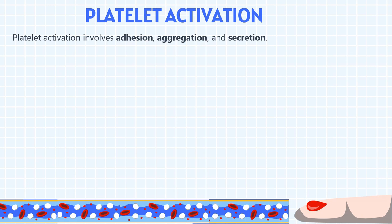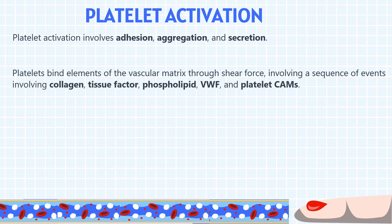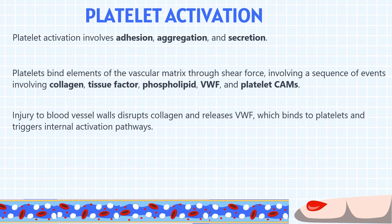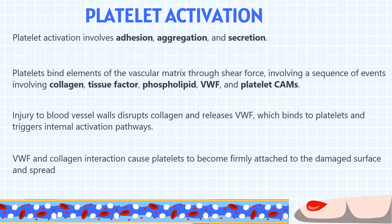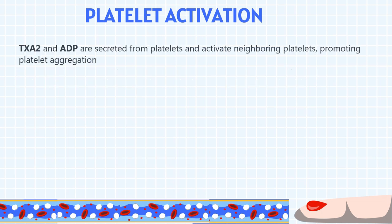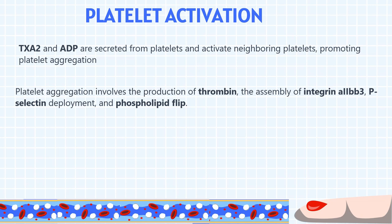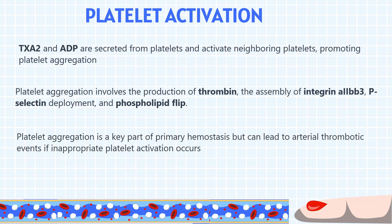Platelet activation involves adhesion, aggregation, and secretion. Platelets bind elements of the vascular matrix through shear force, involving a sequence of events involving collagen, tissue factor, phospholipid, von Willebrand factor, and platelet endothelial cell adhesion molecules. Injury to blood vessel walls disrupts collagen and releases von Willebrand factor, which binds to platelets and triggers internal activation pathways. Von Willebrand factor and collagen interaction cause platelets to become firmly attached to the damaged surface and spread. TXA2 and ADP are secreted from platelets and activate neighboring platelets, promoting platelet aggregation. Platelet aggregation involves the production of thrombin, the assembly of integrin AIIB3, p-selectin deployment, and phospholipid flip. Platelet aggregation is a key part of primary hemostasis but can lead to arterial thrombotic events if inappropriate platelet activation occurs.